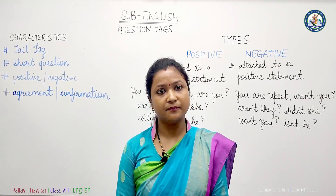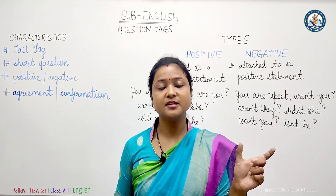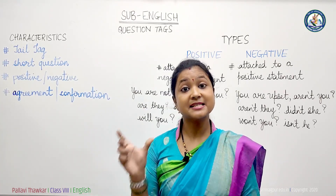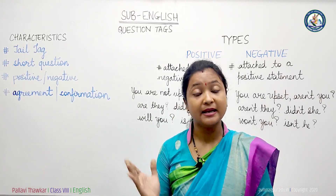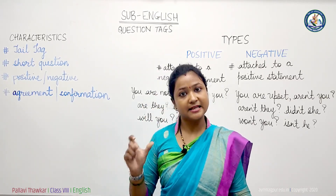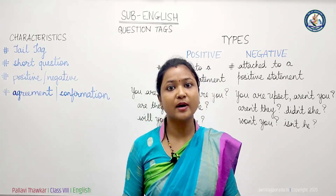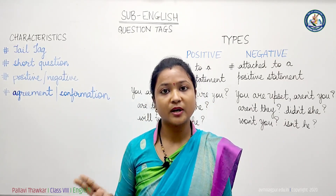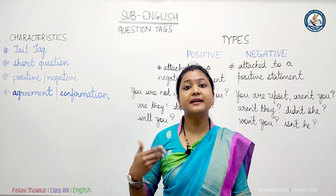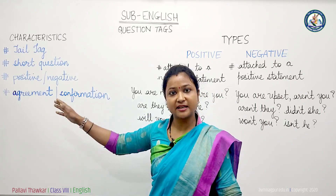If I say, 'Sachin is a good player, isn't he?' — 'Sachin is a good player' is my statement. But the moment I add 'isn't he' to it, that becomes my question tag. That is a tail tag — a tail I am adding to the statement at the end, confirming from you that isn't he a good player. It is negative in nature, it comprises two words so it's a mini-question, and it's a confirmation I am expecting from you.